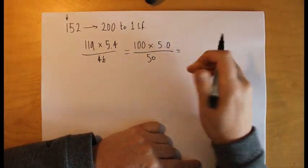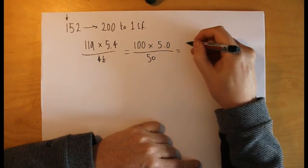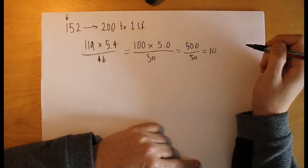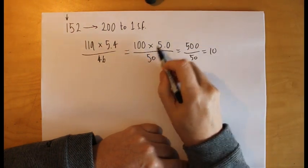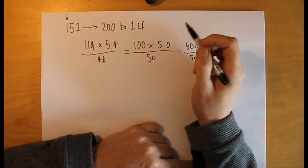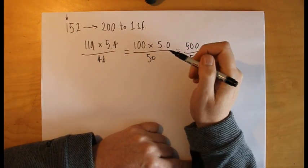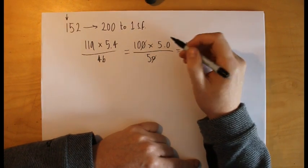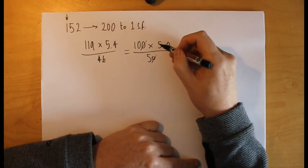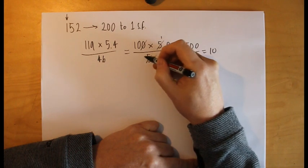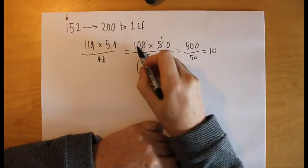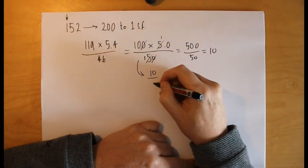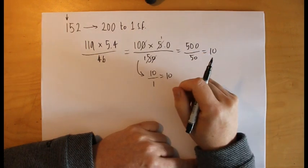This can then be multiplied out and so we end up with 500 on the top and 50 on the bottom, which of course is 10. We could also at this stage cancel things down a little bit here, so we could get rid of a zero on the top and the bottom.